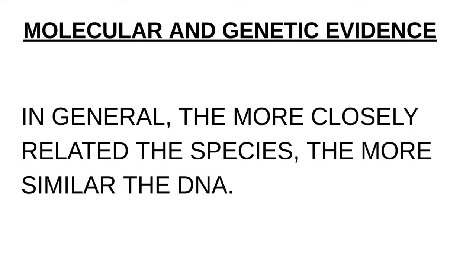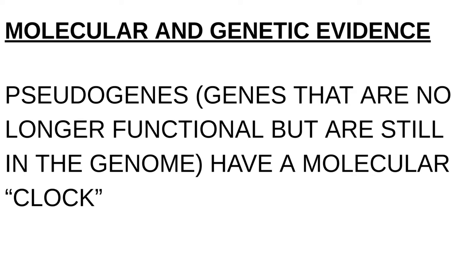We're going to talk about the evidence for evolution. There is molecular and genetic evidence. This wasn't around when Darwin first put forth the theory of evolution. In general, the more closely related two species are, the more similar their DNA. If you look at the difference in DNA between humans and primates, it's very, very small — less than 1%. A lot of the genetic material we share with other organisms that are not even closely related.